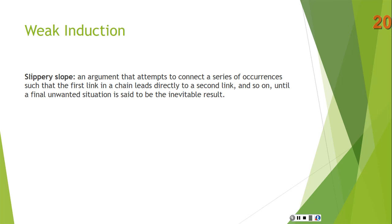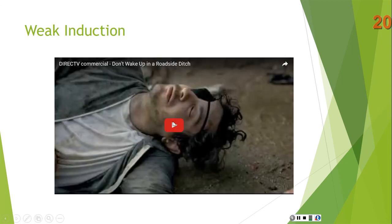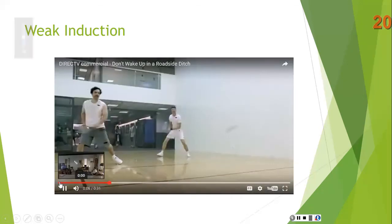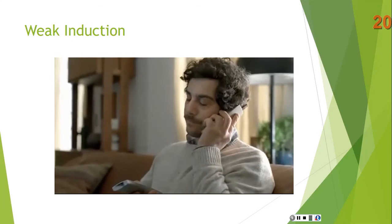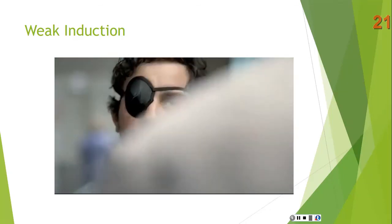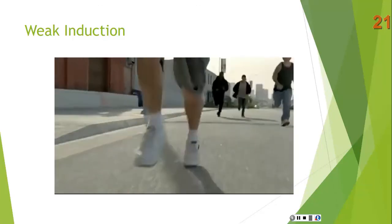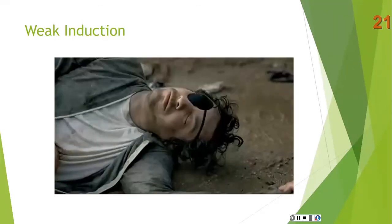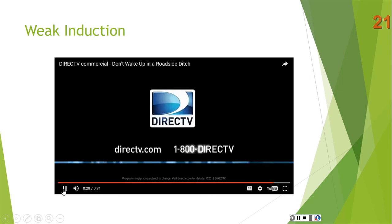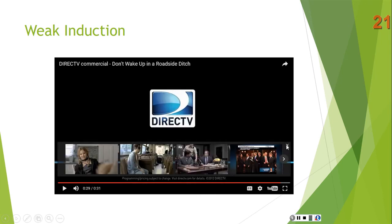It's a fallacy because there isn't necessarily that sort of inevitable causal chain leading from A to Z. Here's a humorous example from a DirecTV commercial: 'When your cable company keeps you on hold, you get angry. When you get angry, you blow off steam. When you blow off steam, accidents happen. When accidents happen, you get an eye patch. When you get an eye patch, people think you're tough. When people want to see how tough, you wake up in a roadside ditch. Don't wake up in a roadside ditch — get DirecTV.'